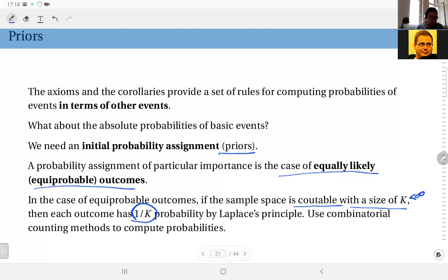And by Laplace principle, the probability should be 1 over k. If this is the case, to compute the probabilities of any event, you will use combinatorial counting methods, which we have talked about last week.